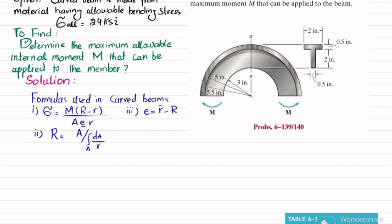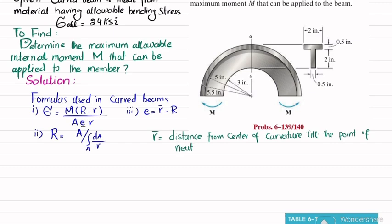Starting with R̄: R̄ is the distance from the center of curvature to the point of centroid — note it is the centroid, not the neutral axis — so we first find where the centroid lies.